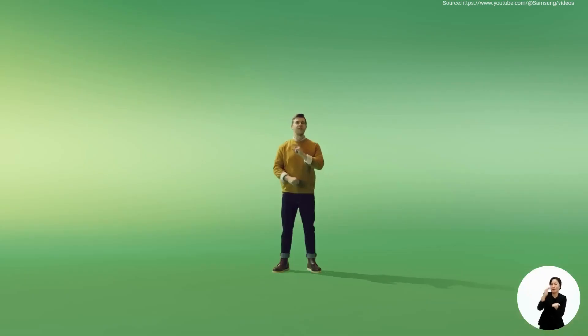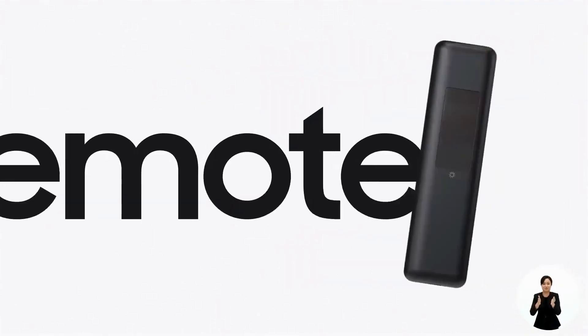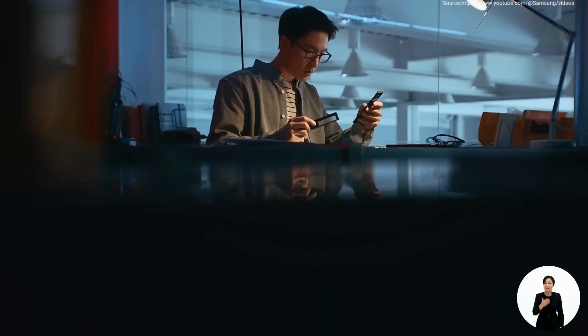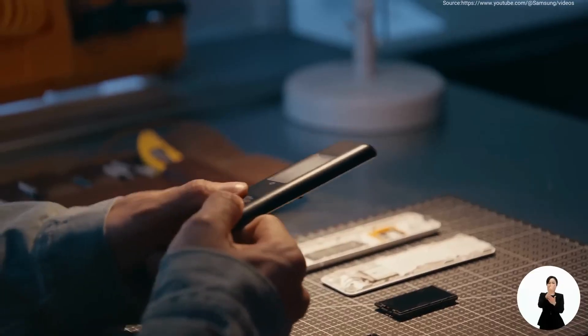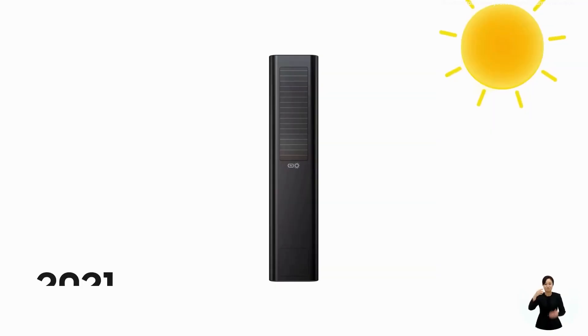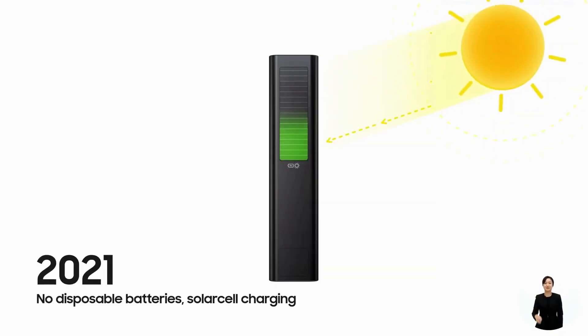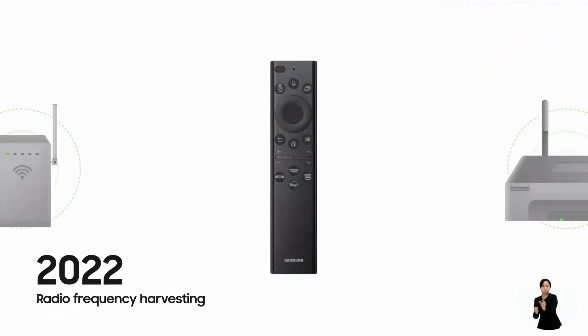And one more thing before we move on to recycling. Our third generation solar cell remote was recently launched. We introduced it for the first time in 2021, and we have continued to upgrade it. The first generation remote could be charged by sunlight through the solar panel. Second generation used radio frequency harvesting technology for indoor charging.